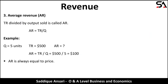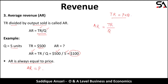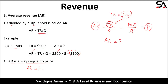Average revenue is total revenue divided by quantity sold. If quantity is 5 units and total revenue is $500, then 500 / 5 = $100, which is average revenue. Average revenue is always equal to price. This is because total revenue equals price × quantity, so average revenue = (price × quantity) / quantity, and quantity cancels out, leaving price.